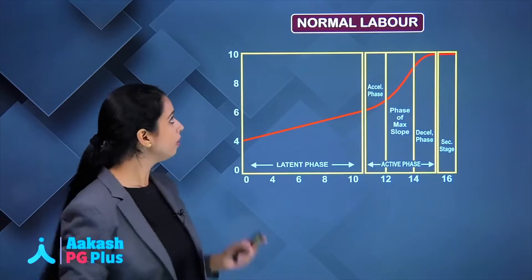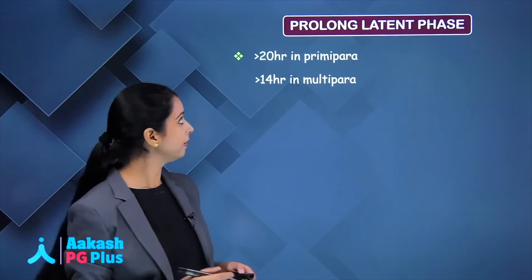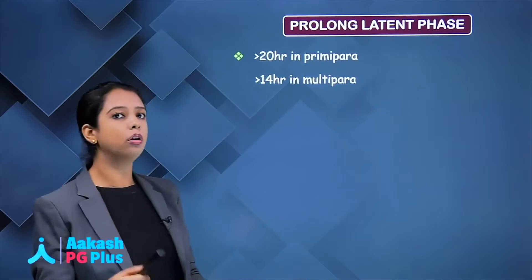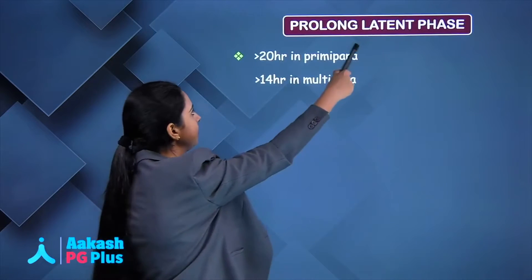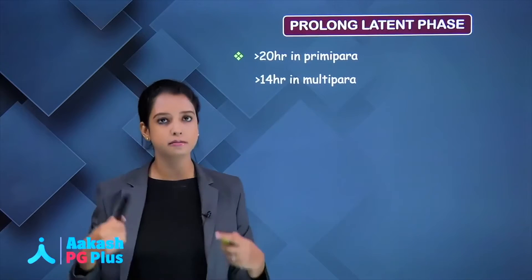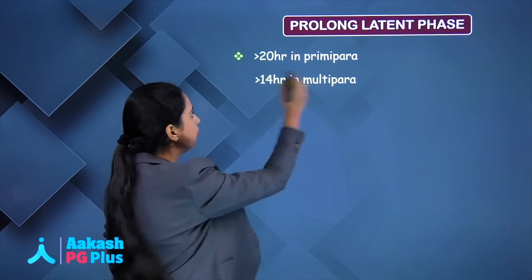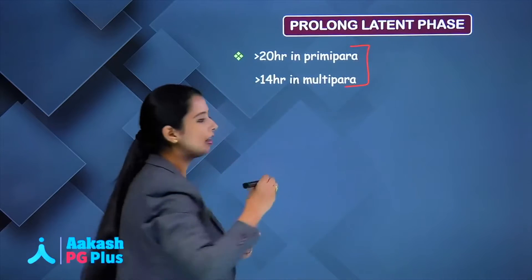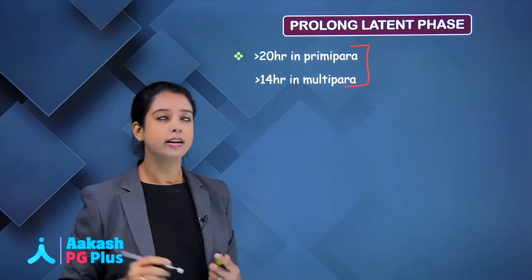Let us study prolonged labour phase by phase. Starting with the latent phase — when do you call it prolonged? When it is more than 20 hours in primigravida and more than 14 hours in multigravida.